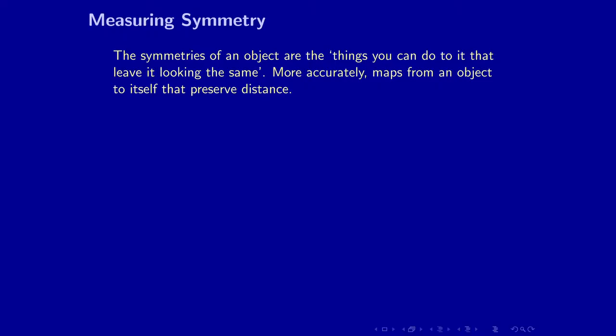Let's accept that we like symmetry and ask: can we objectively say that one thing is more symmetrical than another? We want to think about measuring symmetry. A symmetry of an object is something you can do to it that leaves it looking the same. If I have a rectangle and rotate it 180 degrees — a half turn — it still looks the same, so that's a symmetry. If you're a mathematician, it's a distance-preserving bijection; if not, it's simply something you do to a shape that leaves it looking the same.